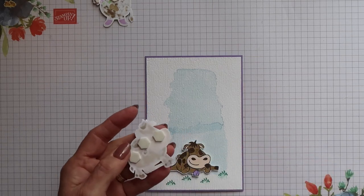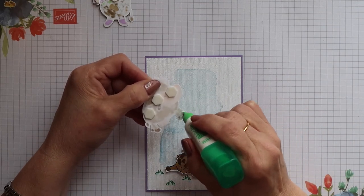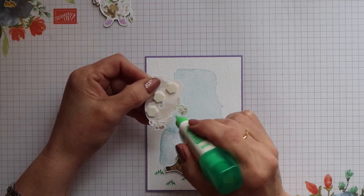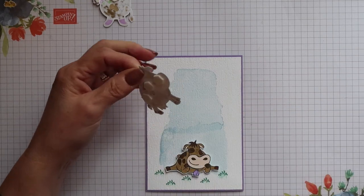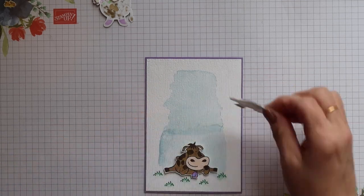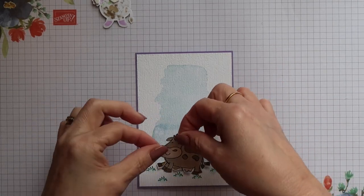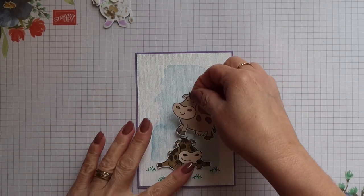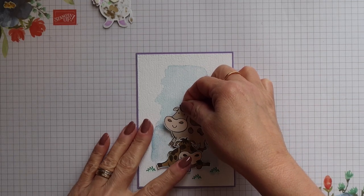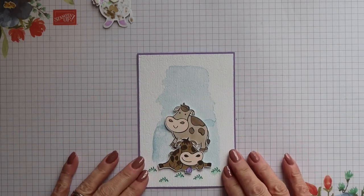For the middle cow, again remove the backings from the dimensionals and then add glue to the bottom half. Now because we haven't put a dimensional behind that first cow's head we can just slot this one into place. So we can slot this one into place behind that first cow and just press him down.